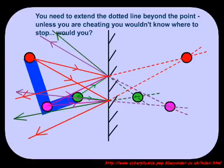If we only draw one ray, we cannot support drawing the image point in at any point on the construction line, not without admitting we're cheating anyway.